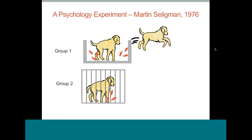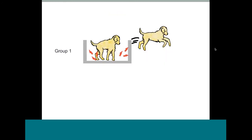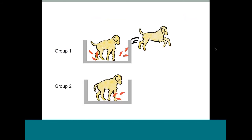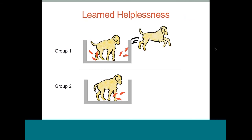After this initial phase, the experimenter took both groups of dogs and put them into bins. The first group quickly jumped out when shocked, like normal dogs would. But the interesting thing happened with the second group — even though the bins were shallow things they could clearly escape from, they didn't. The dog just stood there and endured the shocks. The dog in group two had learned that it's helpless in avoiding shocks, so it gave up trying even in situations it could control. This phenomenon is called learned helplessness.